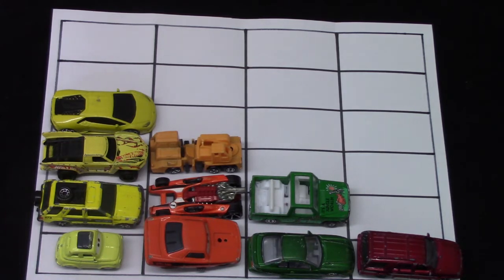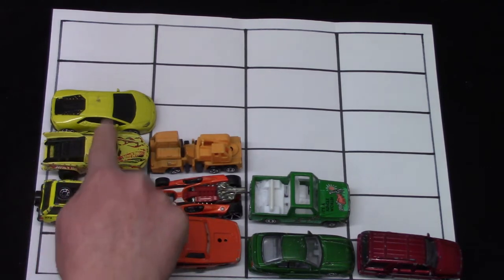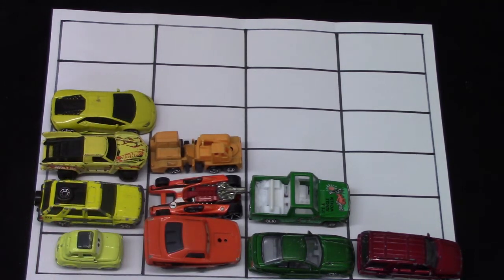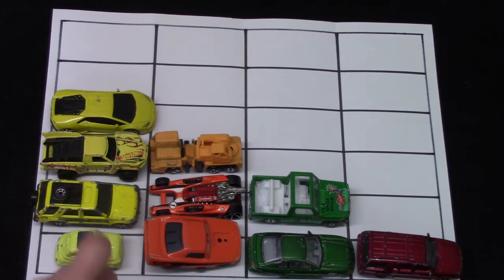Which color vehicle do we have the greatest number? One, two, three, four yellow ones. You're right, there's the greatest number of yellow ones. We're gonna say that that is the most. Most means the same as the greatest number.